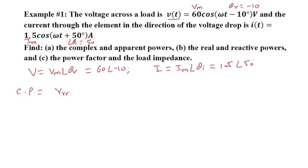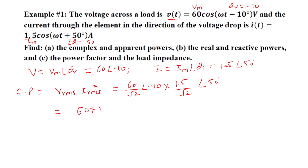The complex power is the product of VRMS and IRMS conjugate. VRMS = (60/√2)∠−10° and IRMS conjugate = (1.5/√2)∠−50° (taking the conjugate reverses the sign of the angle). Multiplying: S = (60×1.5)/2 ∠(−10° − 50°) = 45∠−60°. So the complex power is 45∠−60°.